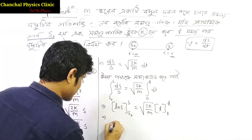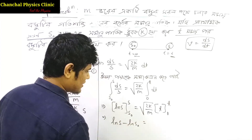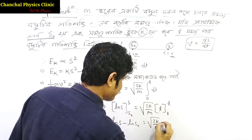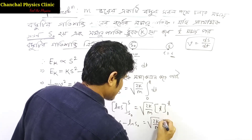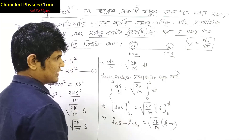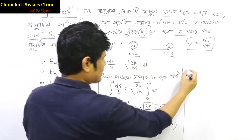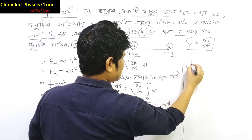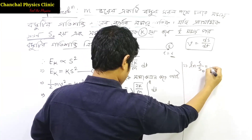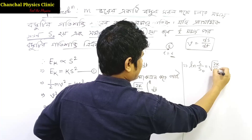If we look at this, we will see ln s minus ln s0, with limits evaluated from 0 to t, equals root of 2k/m times t minus 0. Therefore, ln(s/s0) = √(2k/m) · t.